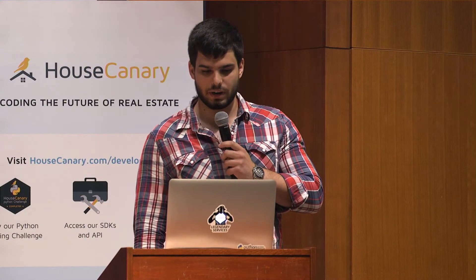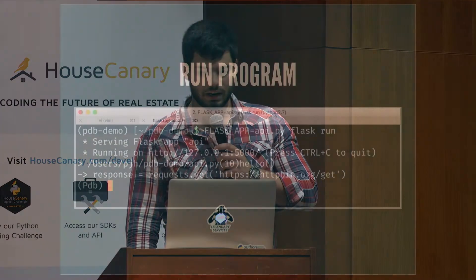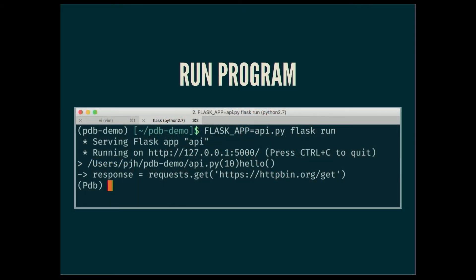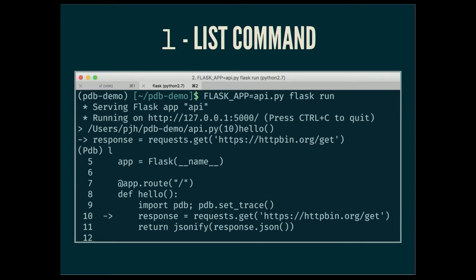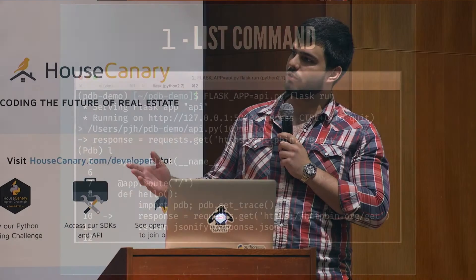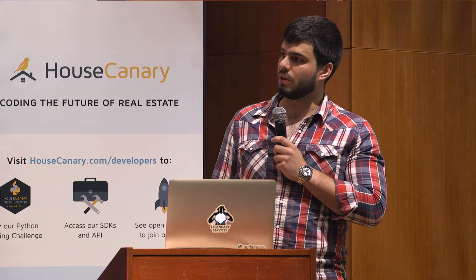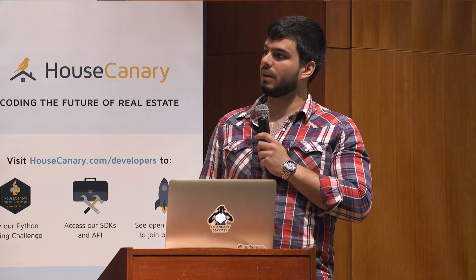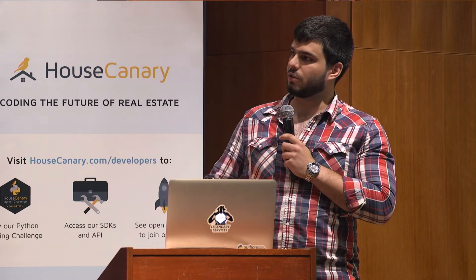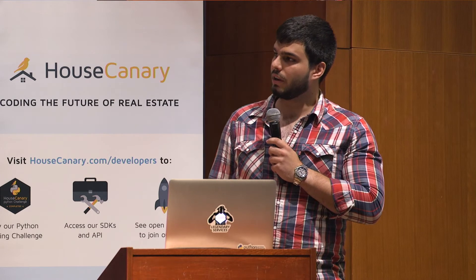You run the program, hit the API, and it drops you into this PDB shell. You can do a lot of stuff here. You can run the L command, which is the list command, and it basically points you to where the code has stopped execution and paused right there.